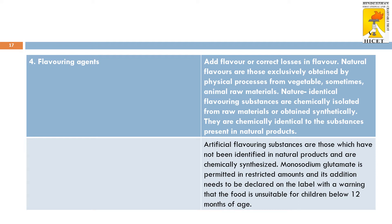Flavoring agents: the main role of a flavoring agent is to improve the taste of food products and to add variety. Some flavors are natural flavors, exclusively obtained by physical processes from vegetables or animal raw materials. Natural identical flavors are chemically isolated from raw materials or obtained synthetically, and can be chemically identical to substances present in natural products. Artificial flavoring substances have not been identified in natural products and are chemically synthesized. One good example of a flavoring agent is monosodium glutamate (MSG), which is permitted only in restricted amounts; its addition must be declared on the label with a warning that the food is unsuitable for children below 12 months of age.